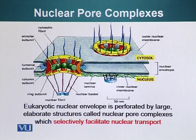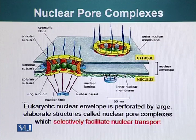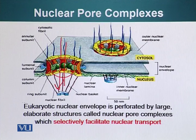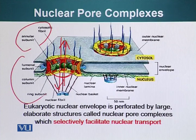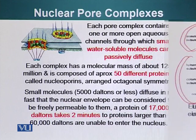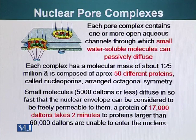The eukaryotic nuclear envelope is perforated by large, elaborate structures called nuclear pore complexes, which selectively facilitate nuclear transport. What's important to note is that about 50 proteins form this pore, through which proteins, molecules, and RNAs can move inside or outside the nucleus. Each pore complex has a molecular mass of about 125 million daltons and is composed of approximately 50 proteins called nucleoporins arranged in octagonal symmetry.